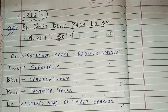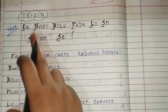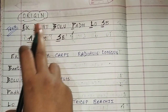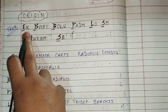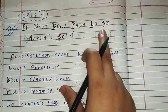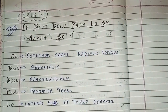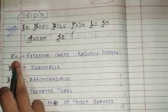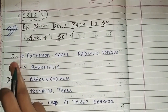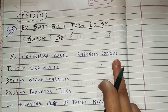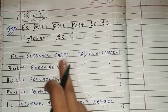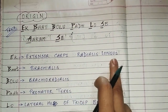Everything is here with tricks so you can digest it comfortably. Now, which muscles come in the origin? Let's move to the origin trick. E — what will come from E? Extensor Carpi Radialis Longus.